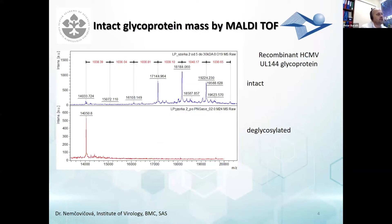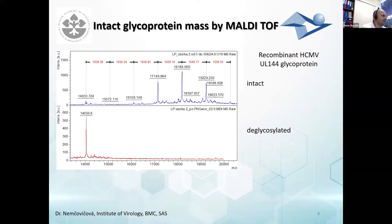In the next upcoming slides, I will show examples of this kind of analysis, so you can get an idea of what can be done and what kind of data you can obtain. In this case, this is a protein from human cytomegalovirus, and it has been expressed as a glycoprotein with the glycans attached. You can see that the mass of the protein exists in several glycosylation states, and these are completely diminished upon the deglycosylation reaction.